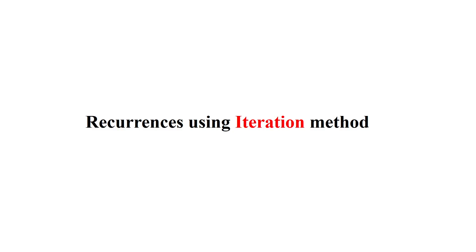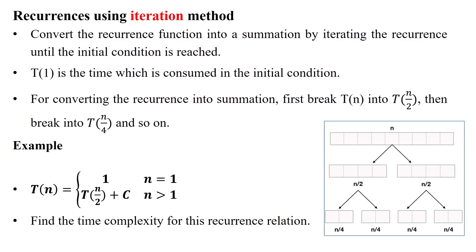Hello everyone. Here we will solve the recurrence relation using the iteration method. The iteration method works by first converting the recurrence equation into a summation, by iterating the recurrence until reaching the initial condition. Here the initial condition is T of 1, which will consume 1 unit of time for execution.